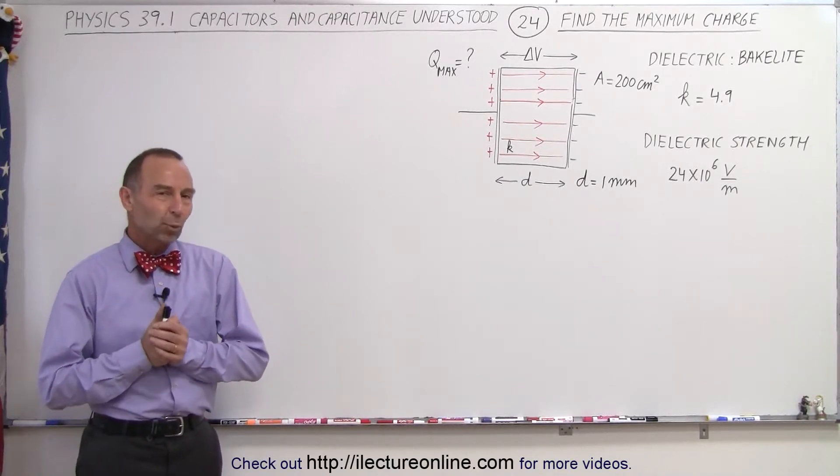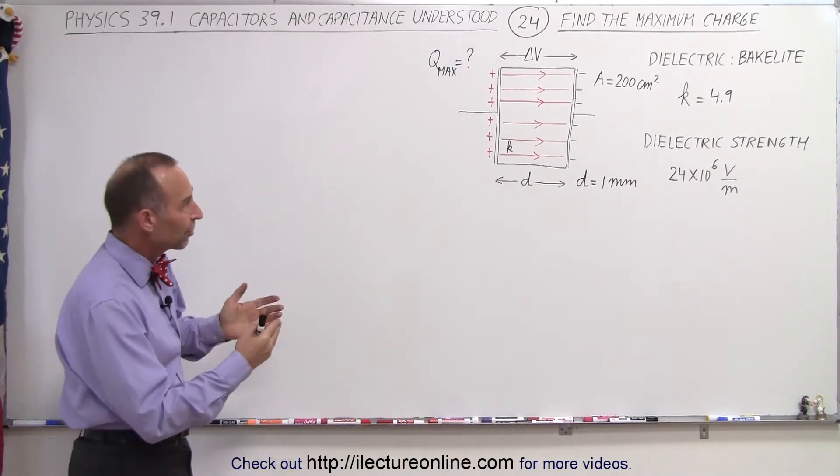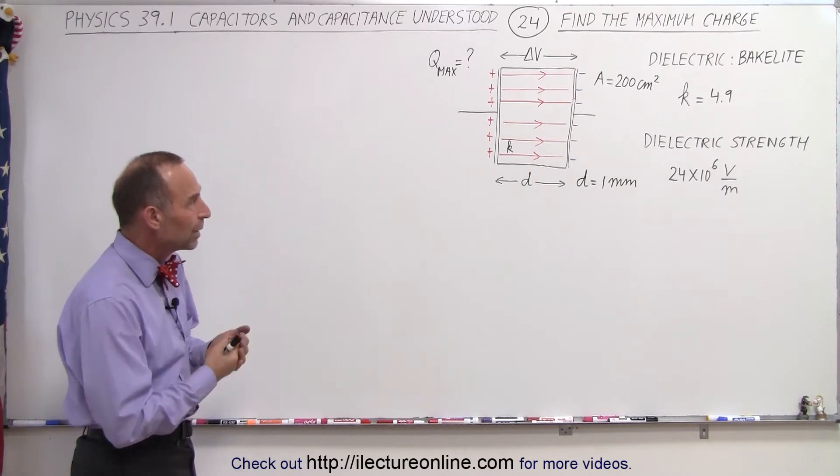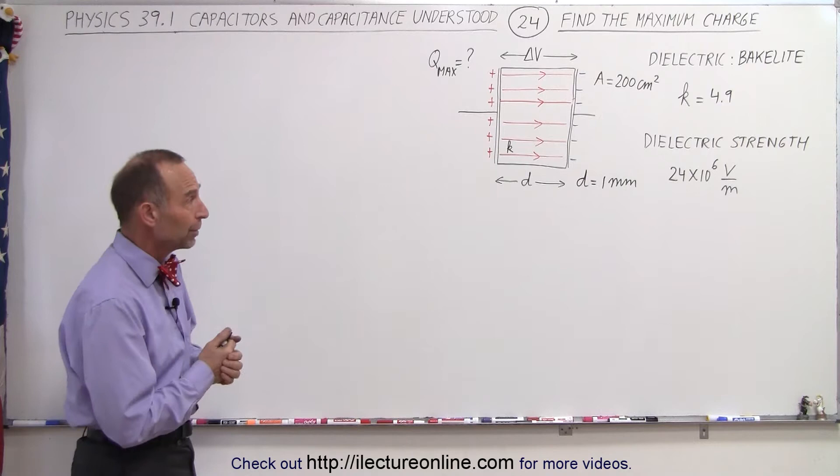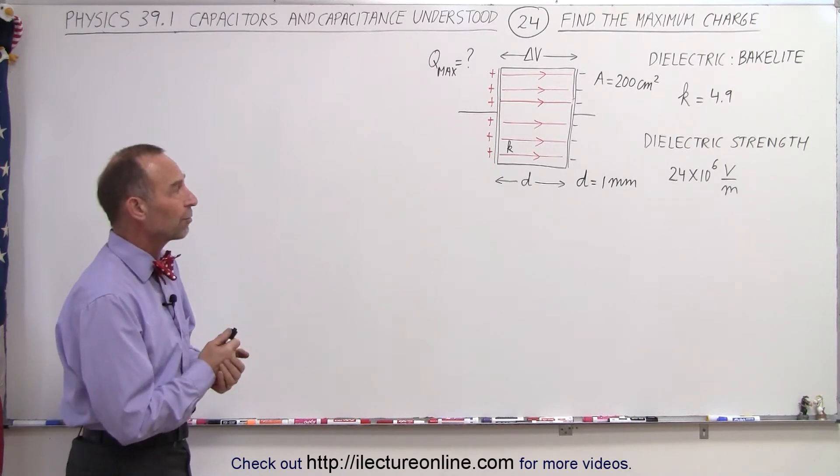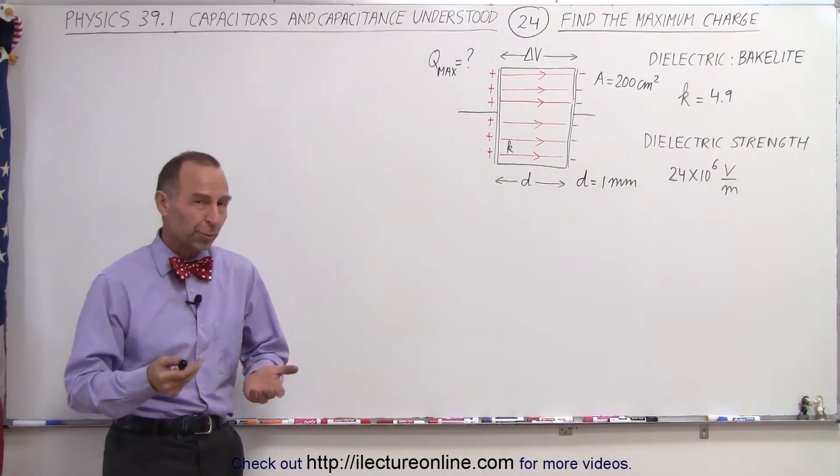Welcome to iLectroOnline. What if we are given a capacitor that has a dielectric between the plates? In this case, let's say it's bakelite with a dielectric constant of 4.9 and a dielectric strength of 24 times 10 to the 6 volts per meter.